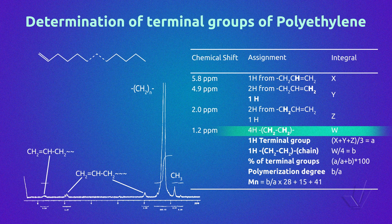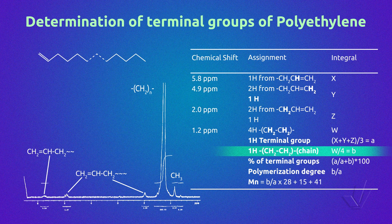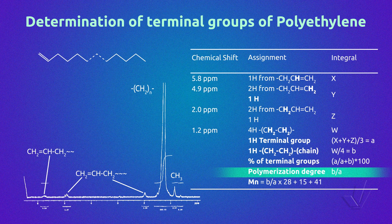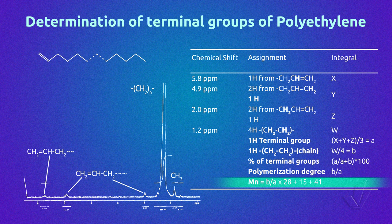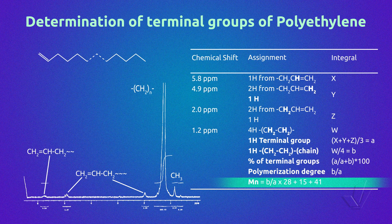The integral of one proton of the chain is obtained from the main signal at 1.2 ppm divided by 4, taking into account that each unit of polyethylene has 4 protons. The polymerization degree, or number of ethylene units present, is obtained by dividing B by A. To obtain the molecular weight, we multiply this polymerization degree by the weight of the polymer unit — in this case ethylene, which is 28 g/mol. To be more precise, we can add the methyl terminal group mass of 15 g/mol and the vinyl terminal group mass of 41 g/mol, though in general these values are negligible compared with the chain mass.